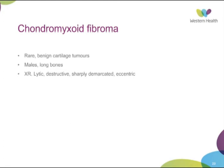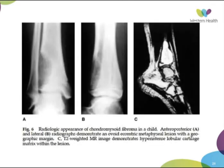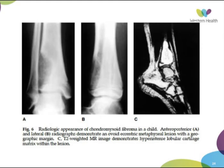CMF — chondromyxoid fibroma. I've never seen it, so I haven't written much about it. It's a benign cartilage tumour occurring more in males and long bones. The x-ray shows a very lytic, very destructive, sharply-demarcated, eccentrically-based lesion. It is part of the differentials. You can see here the whole lateral side of this distal tibia, including down to the joint surface, being eaten away, and it's intensely bright on T1-weighted MRI.